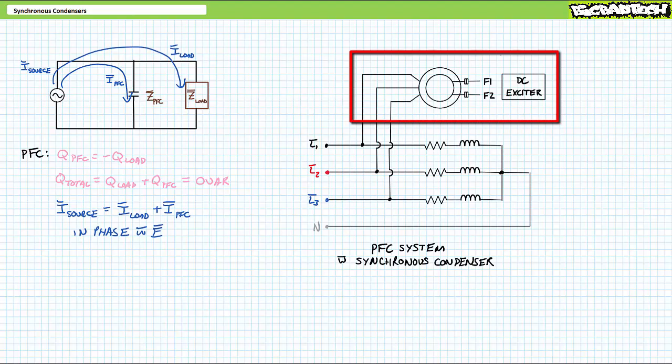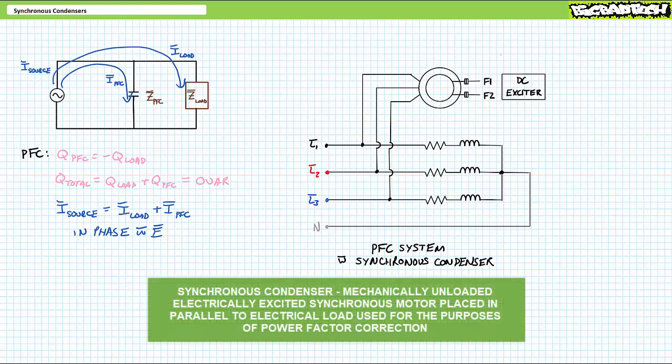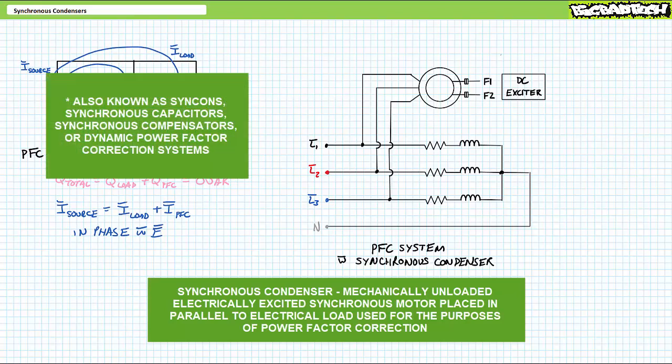A far more accurate and responsive method of live power factor correcting an electrical load is with a synchronous condenser, the topic of today's discussion. A synchronous condenser is a mechanically unloaded three-phase AC electrically excited synchronous motor placed in parallel to the three-phase AC network that requires power factor correction. By varying the field current to the free-spinning synchronous motor, one can find a sweet spot where the reactive power of the synchronous condenser is equal in magnitude yet of opposite polarity as the reactive power needs of the load.